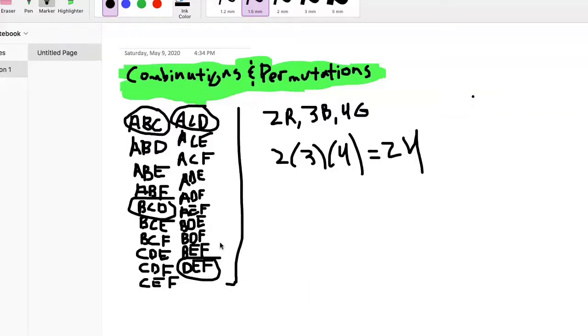So then once you've done all of that, you just add up how many total combinations are there. The total number of combinations are 20, and that's the answer for your permutation question.